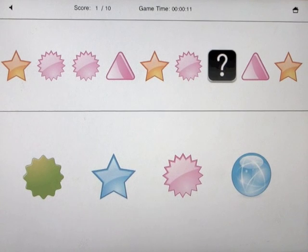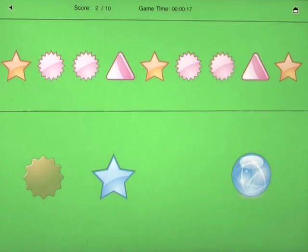Let's see. Star, that thingy, that thingy, and a triangle. Star, that thingy, that thingy, and a triangle. Perfect. And there we go.